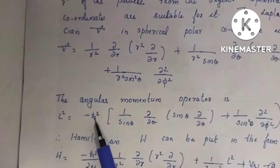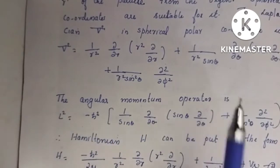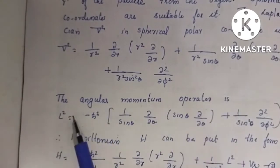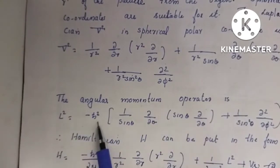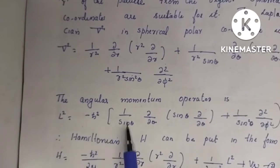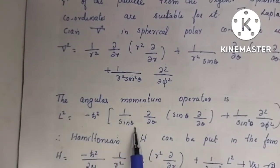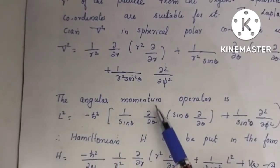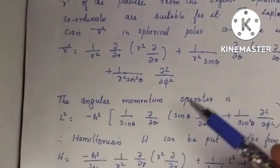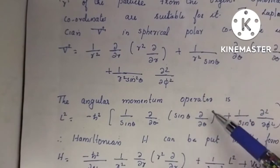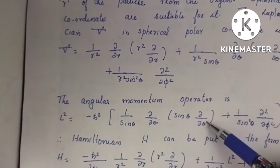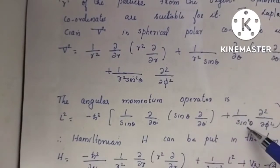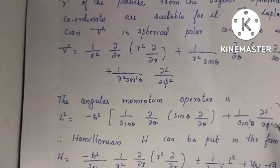Here we have the angular momentum operator. L-squared equals minus h-bar squared into 1 by sinθ times dou/douθ times sinθ times dou/douθ, plus 1 by sin²θ times dou² divided by douφ².